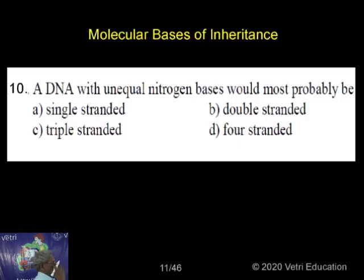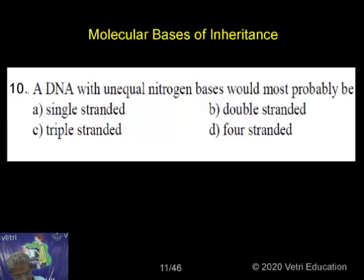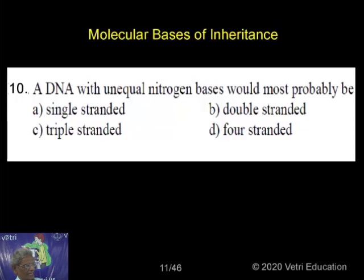Next question is: a DNA with unequal nitrogen bases would most probably be — single-stranded, double-stranded, triple-stranded, or four-stranded?